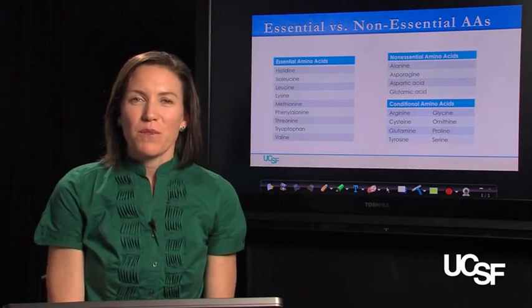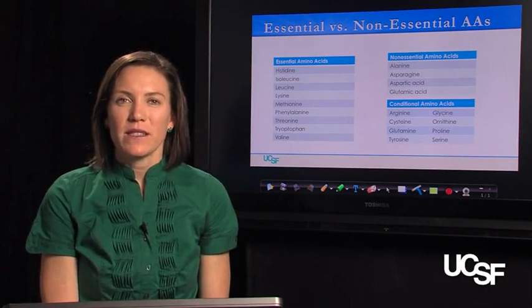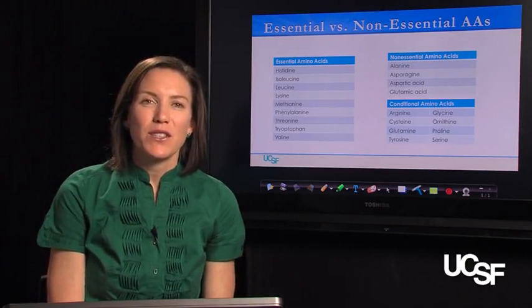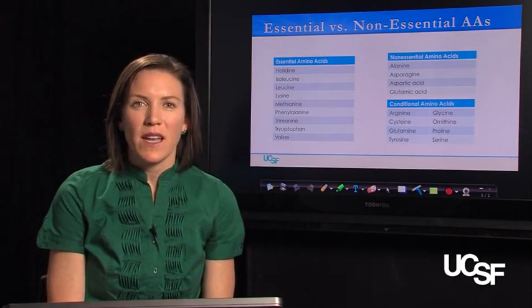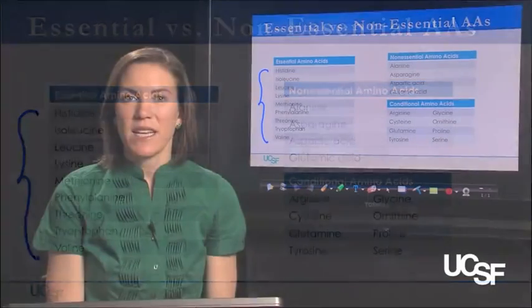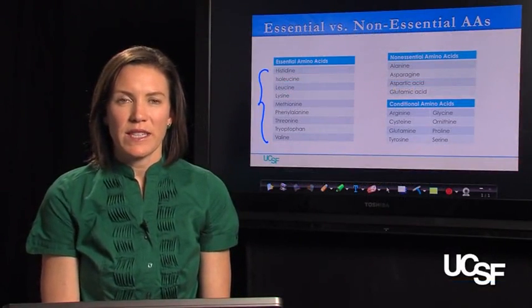There are essential and non-essential amino acids. In nutrition, if we say something is essential, it means it has to be consumed in the diet because your body can't make it. There are nine essential amino acids, and when you eat different plant or animal proteins, they contain a mix of those essential amino acids.